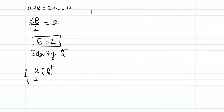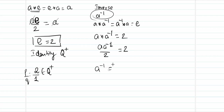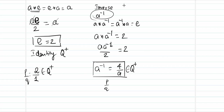For inverse: I need to find a⁻¹ such that a * a⁻¹ gives back the identity element 2. By the binary operation: a * a⁻¹ = a·a⁻¹/2 = 2, so a⁻¹ = 4/a. For every element a, the element 4/a is again of the format p/q and belongs to Q⁺. Hence the inverse element exists.